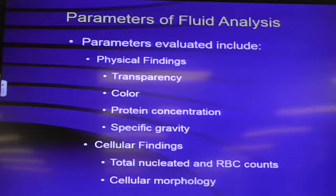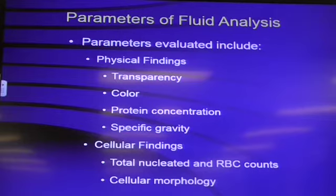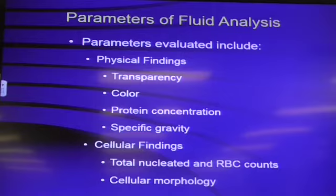Then we're going to look at our specific gravity. In other words, if it's got a bunch of inflammatory cells and that type of thing, or neoplastic cells, what's going to happen to the specific gravity? It's going to go up. The normal specific gravity of plasma is very low. But if we've got cells in there breaking down, also secreting things, it's going to increase your specific gravity.